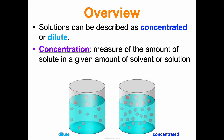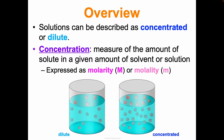Concentration is just a measure of the amount of solute in a given amount of solvent or solution. This can be expressed mathematically in different ways. We can describe it with molarity - a capital M. If you've ever been in the chemical supply closet you may have seen things labeled as 2M or 3.5M molar. We can also describe solutions in terms of molality, which is represented by a lowercase m.